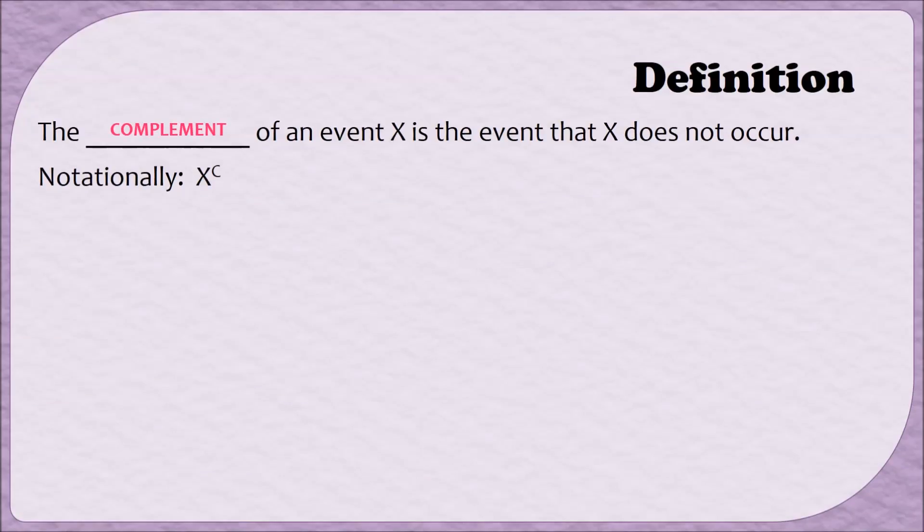The complement of an event X is the event that X does not occur. Notationally, we'll write this with what looks like an exponent, but it is not an exponent. It looks like X to the C. But really, this notation just means the complement of X, or X complement. So if you think about complements for a moment, suppose an event has a 30% chance of happening. That means it has a 70% chance that it won't happen. You can find the probability of a complement by just subtracting the probability of the event from 1. In other words, the probability of the complement of X is the same as 1 minus the probability of X.